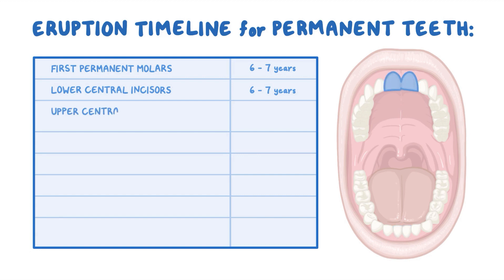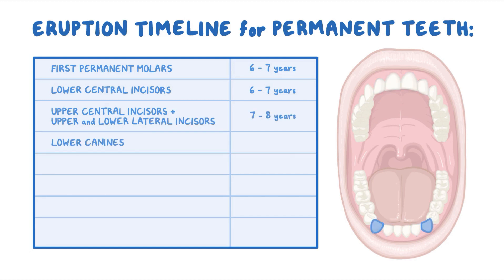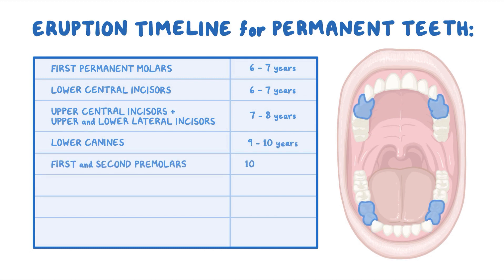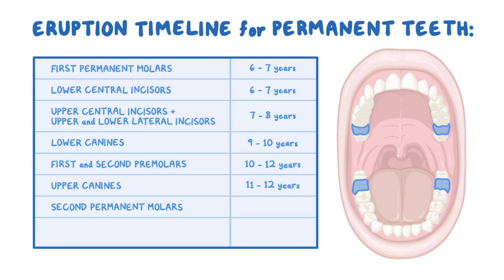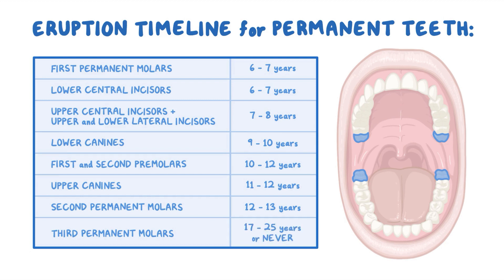Then come the upper central incisors and upper and lower lateral incisors at around 7 to 8 years. The lower canines erupt at around 9 to 10 years, the first and second premolars at around 10 to 12 years, and the upper canines at around 11 to 12 years. The second permanent molars erupt around 12 to 13 years. Finally, the third permanent molars, or wisdom teeth, usually don't erupt until around the ages of 17 to 25, and sometimes never erupt, so they remain impacted in the jaw or simply aren't present at all.